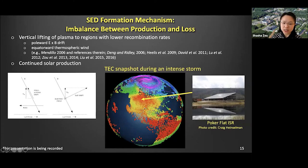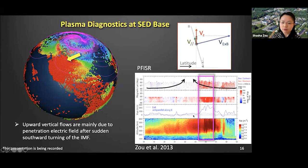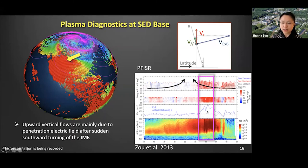The Advanced Modular Incoherent Scatter Radar can nearly simultaneously measure plasma drift at various directions in the ionosphere. We find SED cases where ISRs happen to be right underneath them. For example, the plasma diagnostics provided by PFISR located near the SED base region show that the vertical lifting is mainly due to the penetration electric field and enhanced convection. The field-aligned component occasionally contributes positively, but the most important lifting force is the E×B force, in particular its northward component.